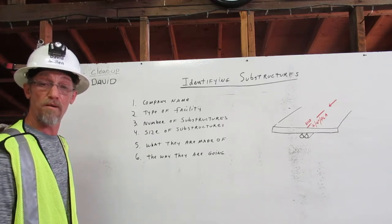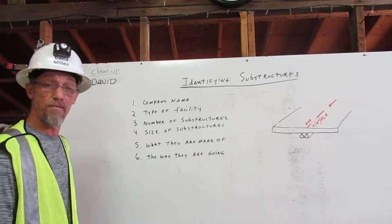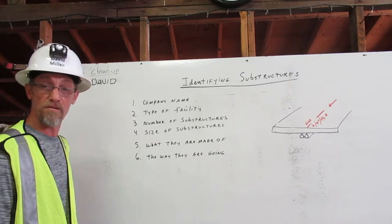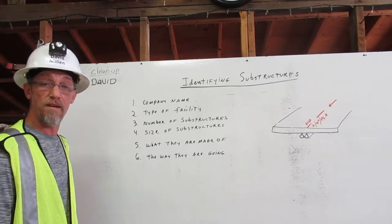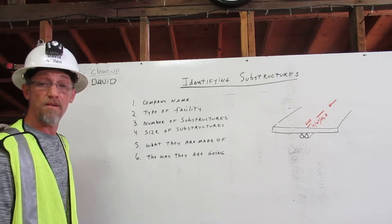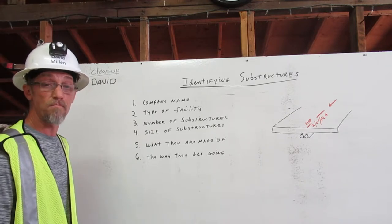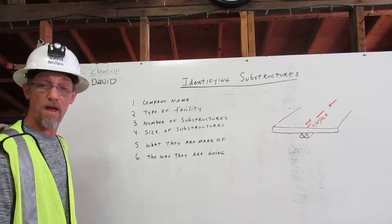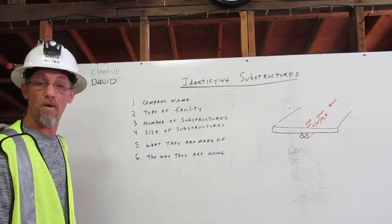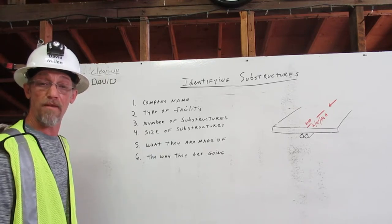Facility operators are required to provide excavators with information regarding their substructures. They leave markers that tell us the company name, type of facility, number of substructures, size of the substructures, what they are made of, and the way they are going.